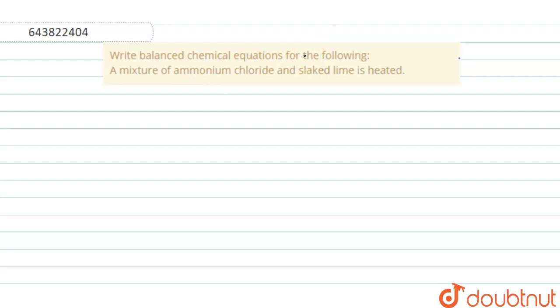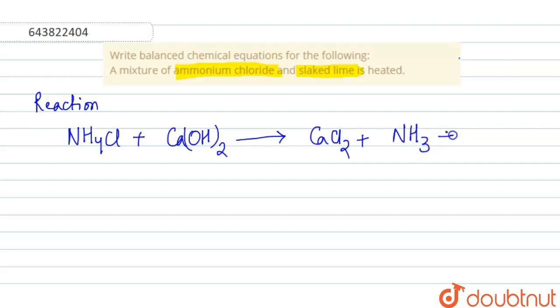We have to write balanced chemical equation for a mixture of ammonium chloride and slaked lime that are heated. So, ammonium chloride, let us write the reaction. That is ammonium chloride NH4Cl reacts with Ca(OH)2, that is slaked lime, to form calcium chloride CaCl2 plus NH3 plus H2O.